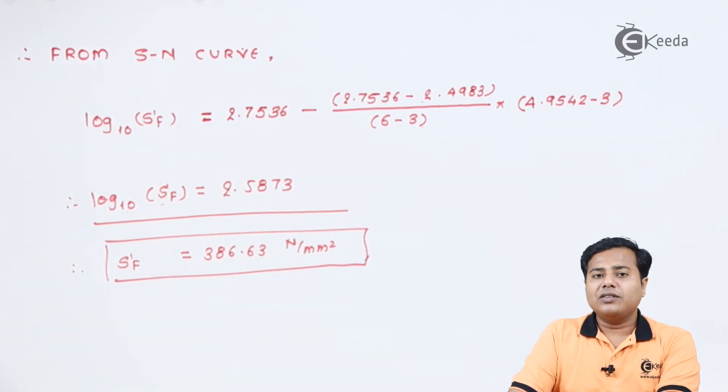And got the value in terms of the logarithmic. Taking the anti-log, we got the final value, which is the final strength of the given product. In the next session we will look at a similar example where with different conditions we will design the given product for the finite life. Thank you so much for watching this video. If you like this video, please subscribe to iKeda. Thank you.